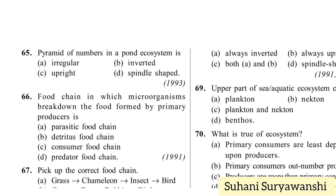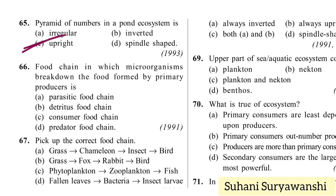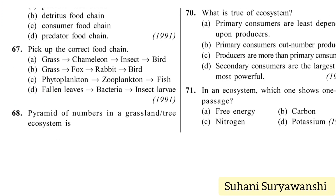The pyramid of numbers in a pond ecosystem is upright — option C. A food chain in which microorganisms break down food formed by primary producers is the detritus food chain (DFC). Correct food chains: grass → chameleon → insect → bird is incorrect; phytoplankton → zooplankton → fish is a correct food chain — option C.